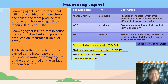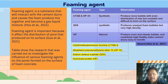First, we look at the foaming agent. A foaming agent is a substance that interacts with the cement slurry and causes the foam produced to mix together and become a gaseous mixture. This foaming agent is important because it affects the distribution of pores. Research has shown that CTAB and OP10 produce even bubbles but are unstable, while SDS and HP produce steady bubbles that do not easily fracture.